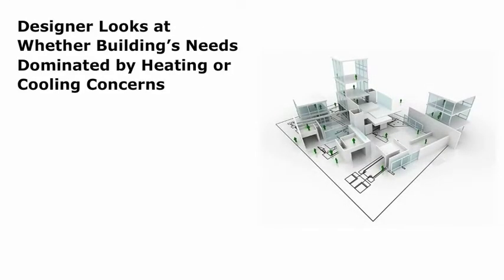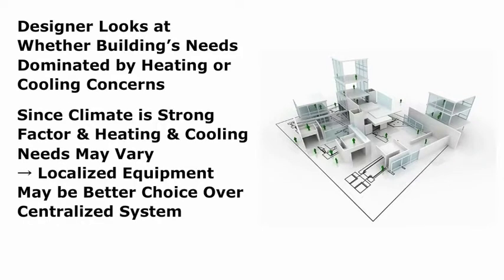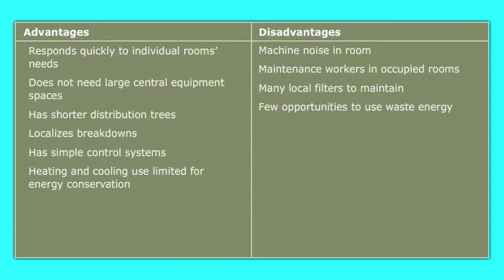The designer of a building's mechanical system looks at whether the building's needs are dominated by heating or by cooling concerns. Because climate is such a strong factor in small buildings, and heating and cooling needs may vary from room to room, localized equipment may be the better choice over a centralized system. There are two system types: a local HVAC system and a central HVAC system, each with its own advantages and disadvantages.